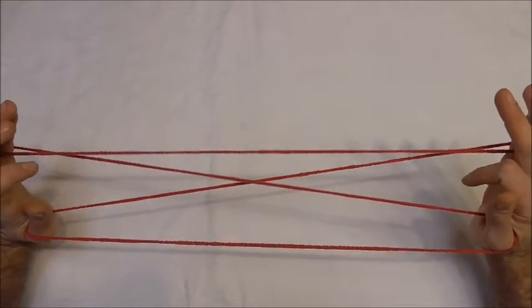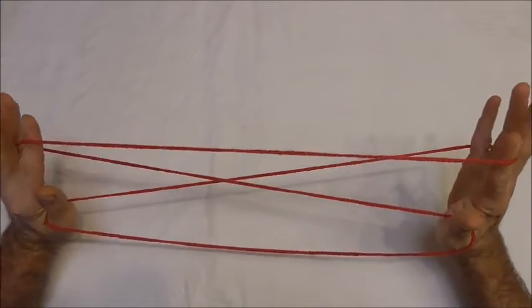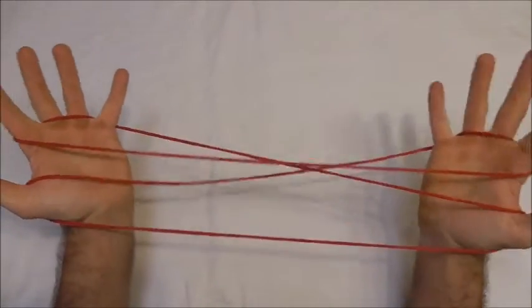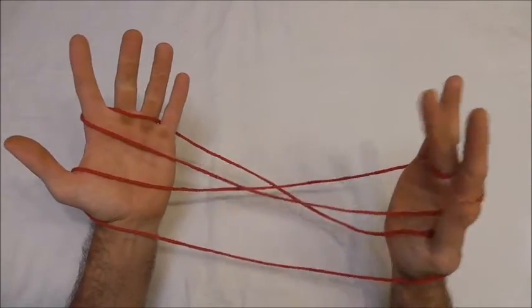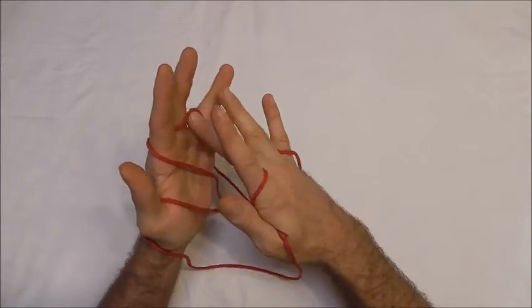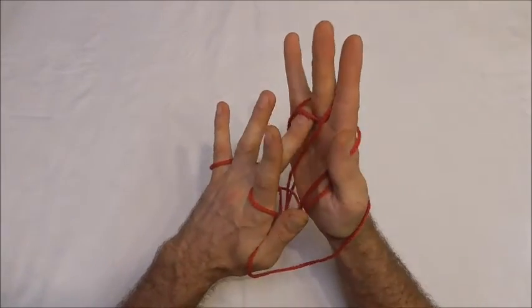Then I want to use my pointer fingers to go under the near little finger string and pick it up, which should give me a string across my palms here. I want to pick those up with my middle fingers on either side.